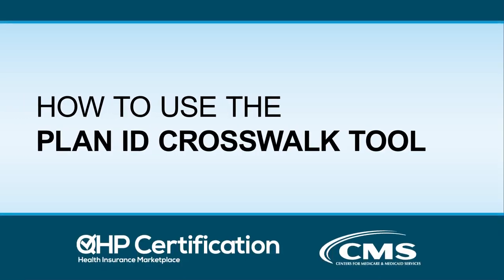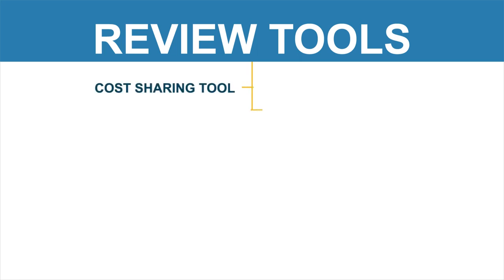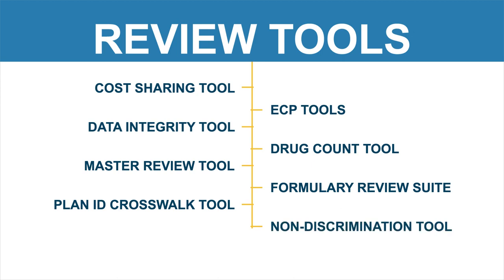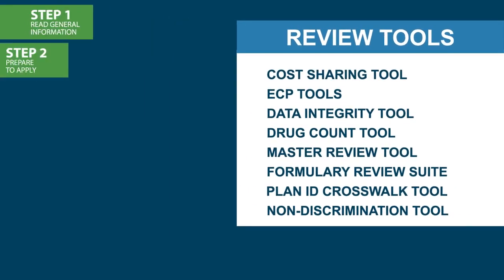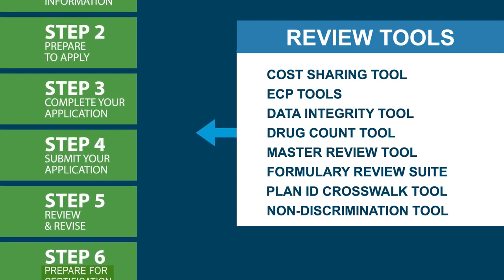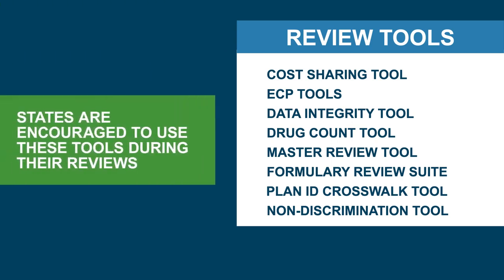Did you know that CMS provides review tools that issuers and states can use to prepare for the QHP application process? These review tools allow you to check for errors within your QHP application that would result in corrections after submission. Issuers are encouraged to use these tools to identify and correct data errors prior to submitting application data in order to reduce the number of required corrections identified during CMS's reviews. States are encouraged to use these tools during their reviews to identify potential errors in their issuers' application data that would require issuers to make corrections.